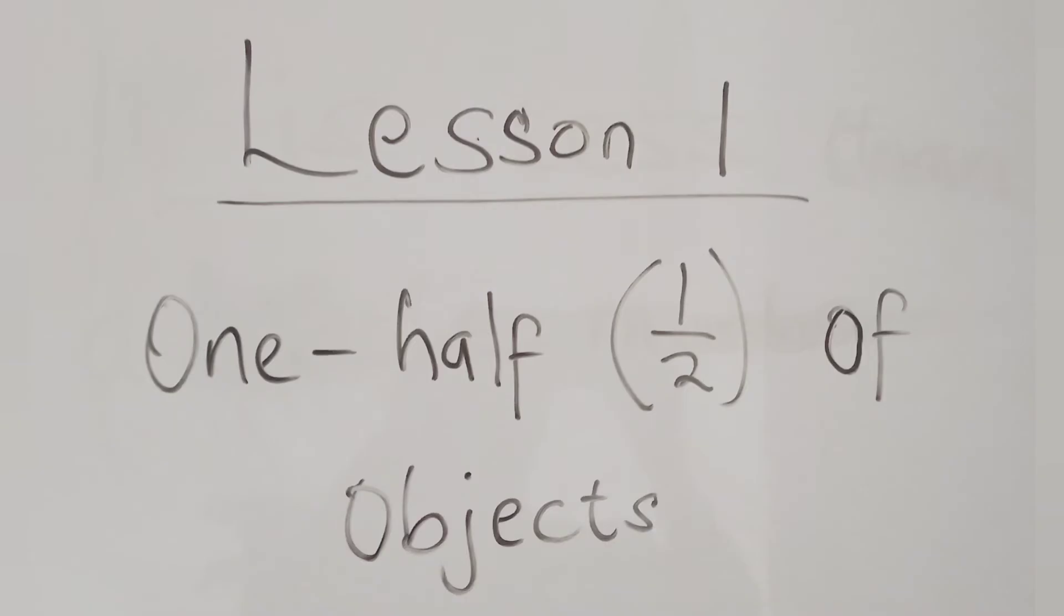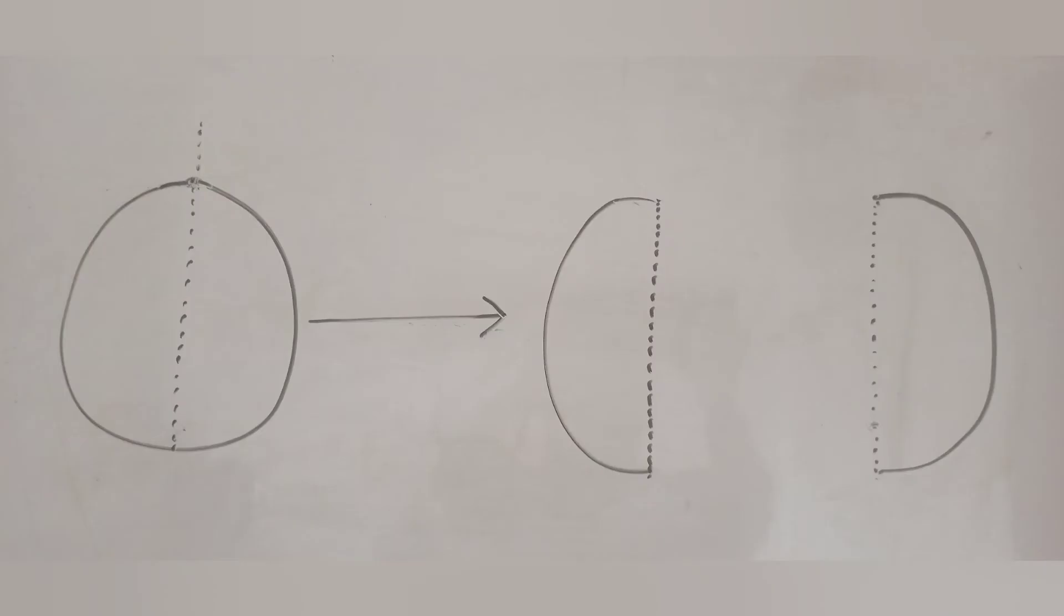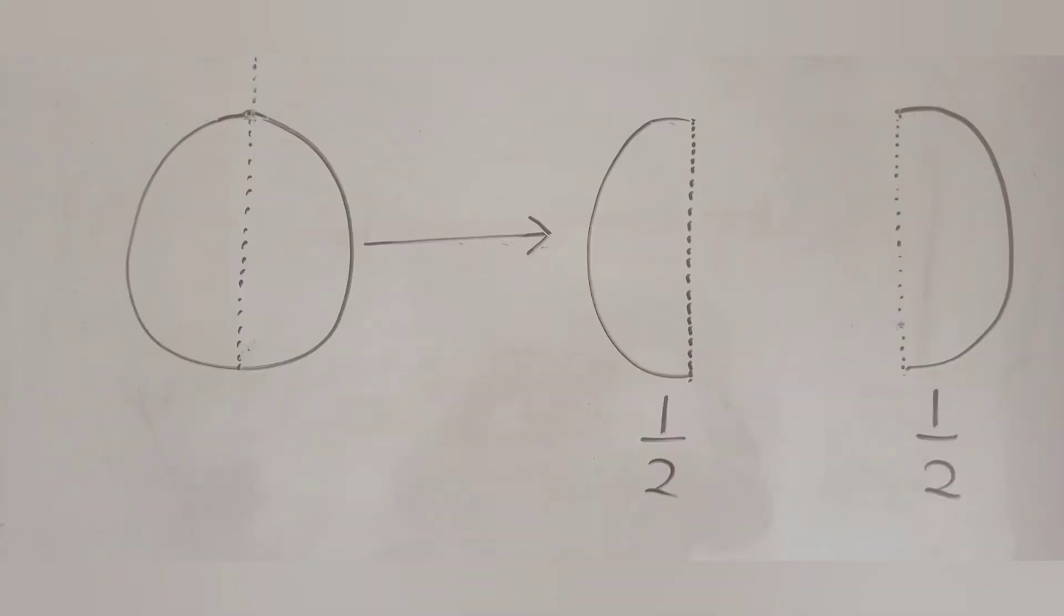Now, let's look at one half of objects. If I have an orange and I divide it into two equal parts, each part will be half. Each part of the orange will be called half of the orange.